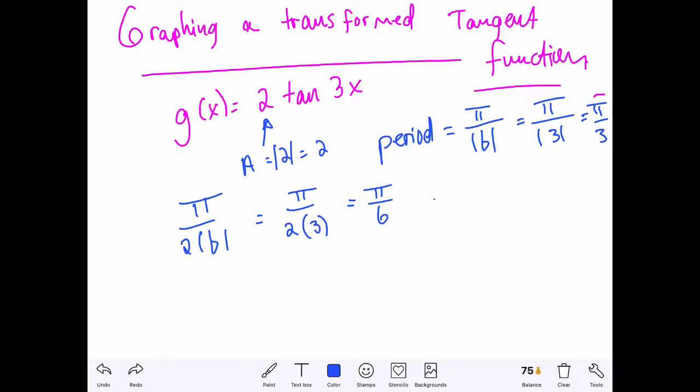So π sixth would be our positive. And let's also multiply that by an odd multiple, by negative 1 times π sixth, which gives us negative π sixth.